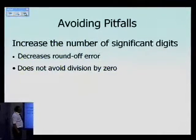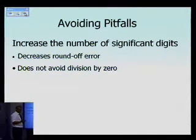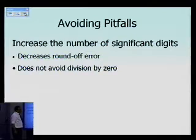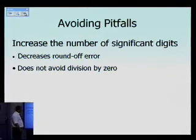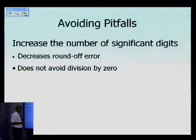In order to avoid these pitfalls, we can increase the number of significant digits — going from single precision to double precision, quad precision, or extended precision. That will surely decrease the round-off error. But it's not going to avoid division by zero, because no matter how many significant digits you choose, if there is going to be a division by zero, that will occur anyway.